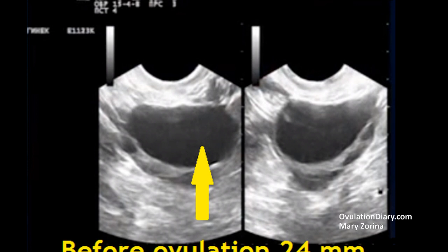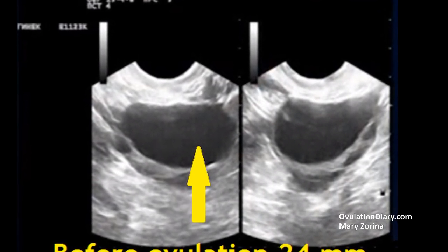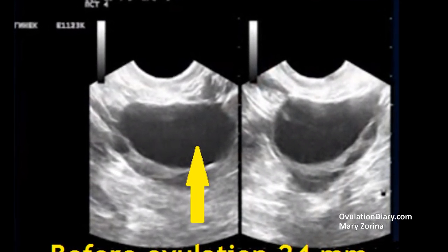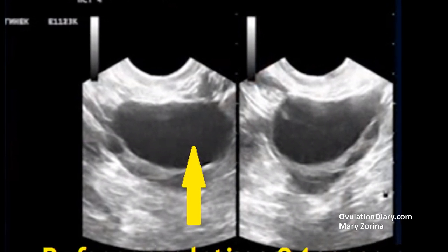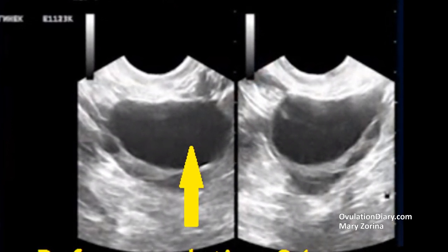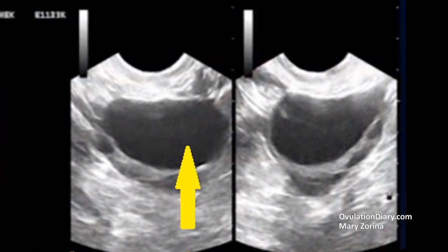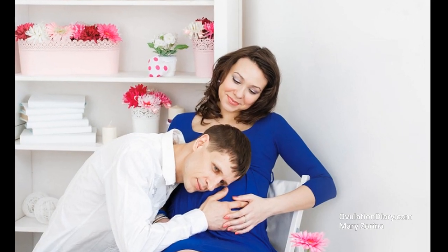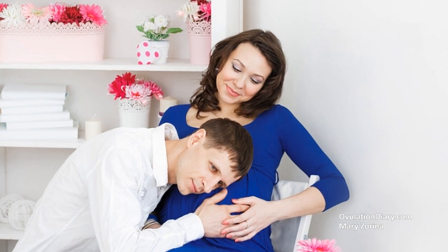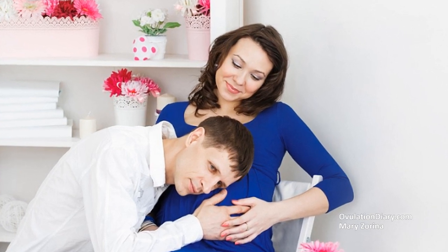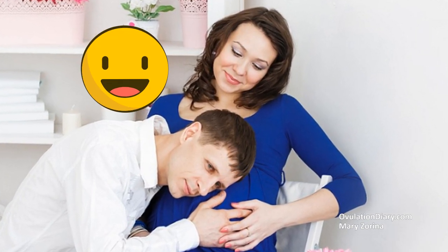Advice: if the last sexual intercourse took place the day before, you can take a break today and repeat tomorrow. Due to this break, more motile sperm cells with good fertilizing ability are produced. For more information on when it is better to have sex to get pregnant, watch a separate video — the link is in the description. Have a successful planning.